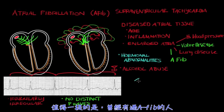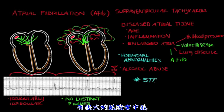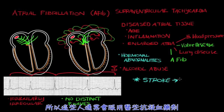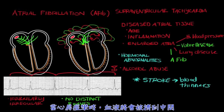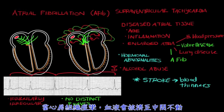It's also worth mentioning that people who have AFib are at an increased risk for having strokes, so these people are typically put on some sort of blood thinner medication. Why are they at higher risk? When the atrial tissue is spasming, blood is going to pool in the atrium.